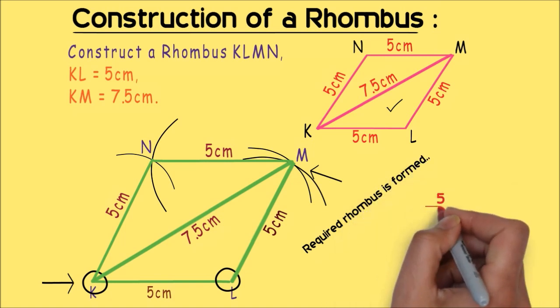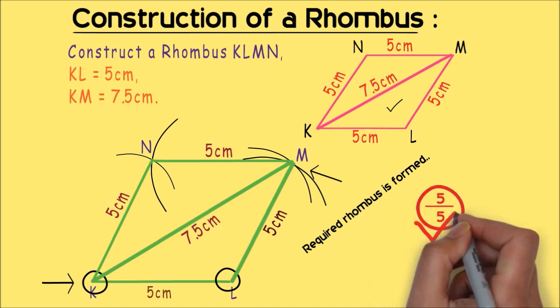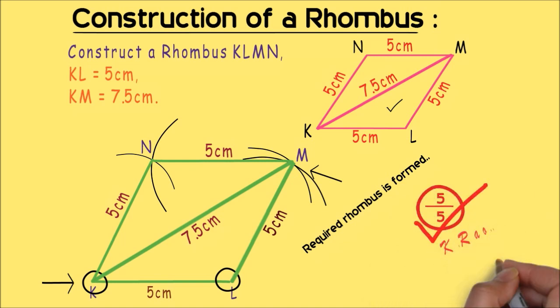Tomorrow, let's construct a rhombus where the diagonals are known. We know the diagonal property of a rhombus: they bisect each other at right angles. Thank you.